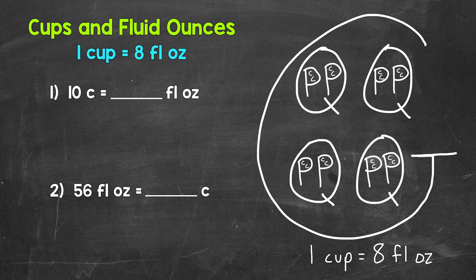To start, there are eight fluid ounces in a cup. In other words, one cup equals eight fluid ounces.